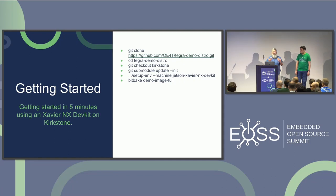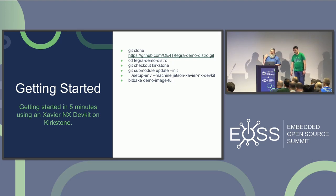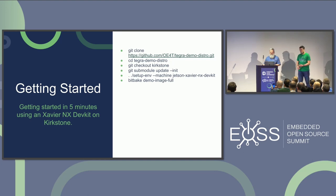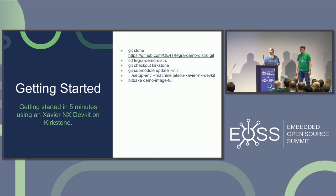To get started with us right now: clone Tegra Demo Distro, check out the Kirkstone branch — we use Git submodules to maintain layers. Set up a Jetson Xavier NX Dev Kit and build the demo image, and you're off to the races. This is a pretty quick process to get going, and the Dev Kit is not terribly expensive.